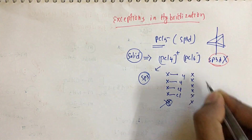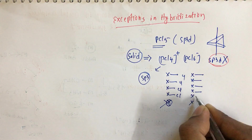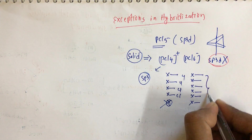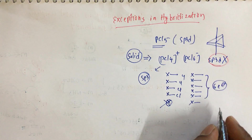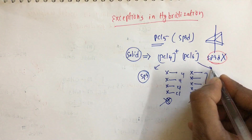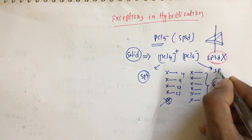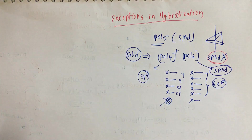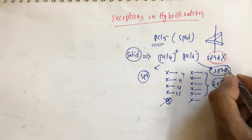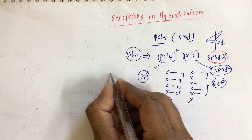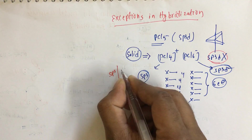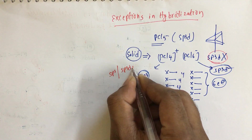For PCl6-, we have five chlorine electrons plus one negative charge, giving six total coordinating electrons. Six electrons means sp3d2 hybridization. So if the question asks about the hybridization of solid PCl5, the answer is sp3 and sp3d2.